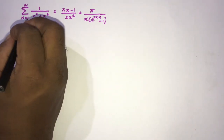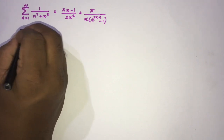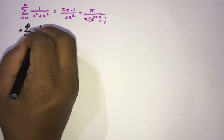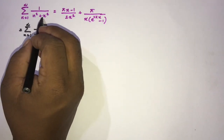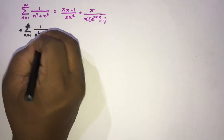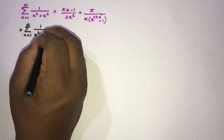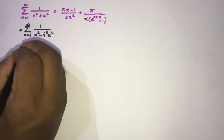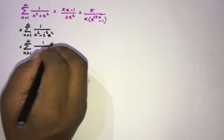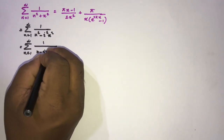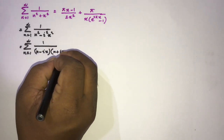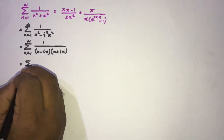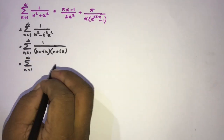First, I am going to take the series ∑(n=1 to ∞) 1/(n² + x²). Here we write −x² as −(ix)², giving 1/((n − ix)(n + ix)). Now we can find the partial fractions: ∑(n=1 to ∞) of 1/((n − ix)(n + ix)).